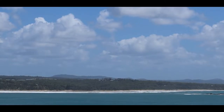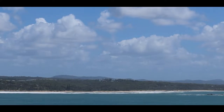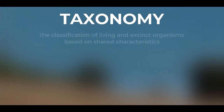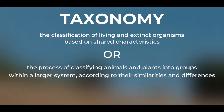In this three-part Birding Today video series, we'll be exploring exactly how birds are arranged or classified into different groups. In biology, this is known as taxonomy — the classification of living and extinct organisms based on shared characteristics. Another way to put it is the process of classifying animals and plants into groups within a larger system, according to their similarities and differences.